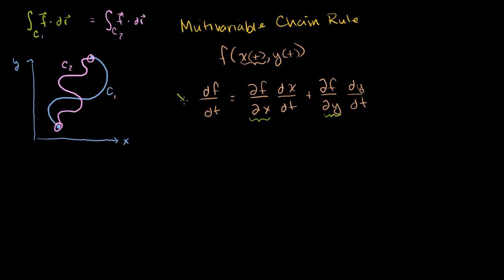So that's our toolkit — the multivariable chain rule. Now let's say I have some vector field f that is a function of x and y, and it happens to be the gradient of some scalar field. Let's say it equals the gradient of some scalar field, which I'll call capital F, also a function of x and y.